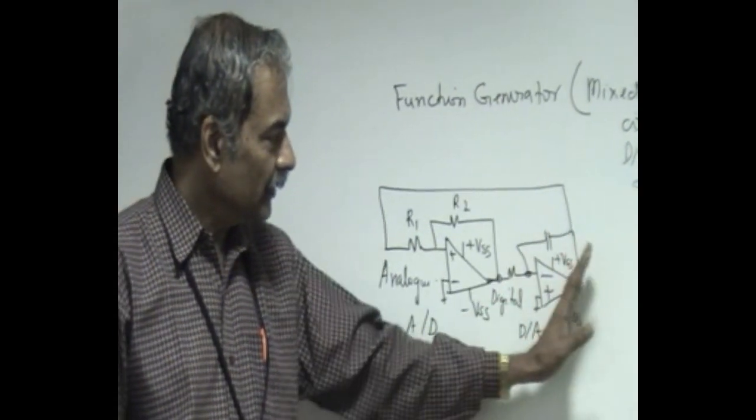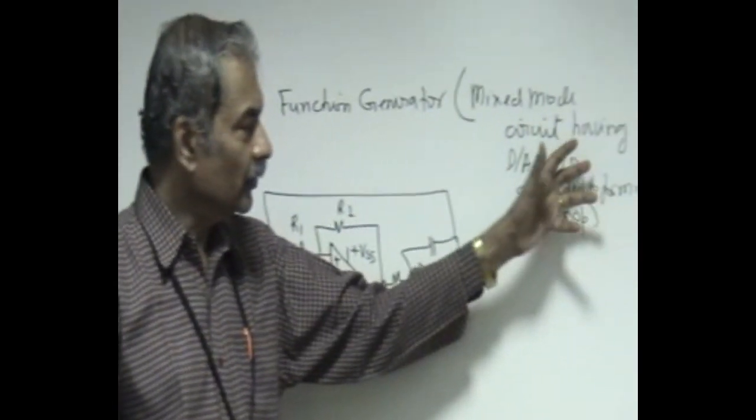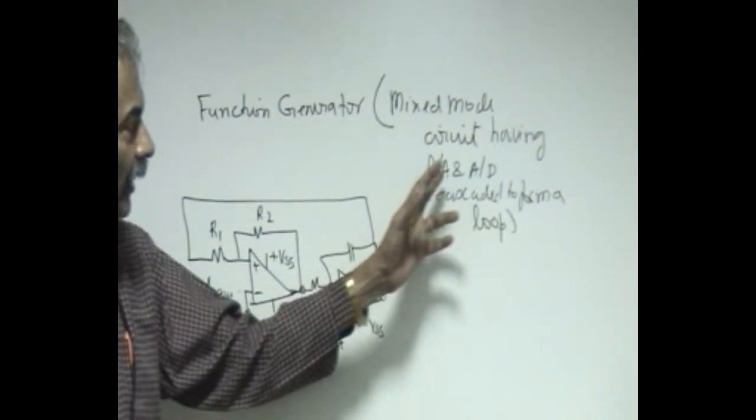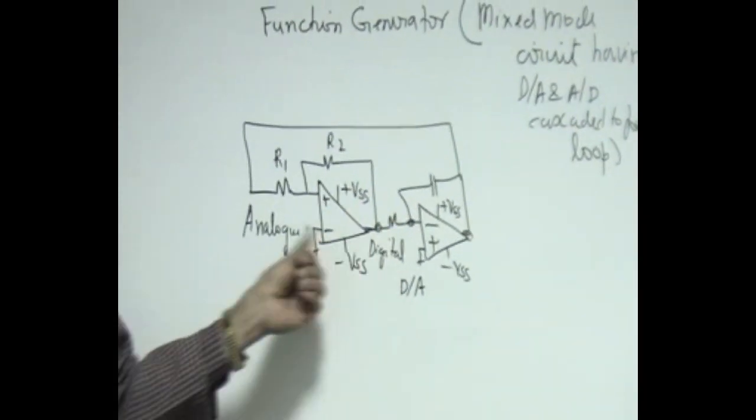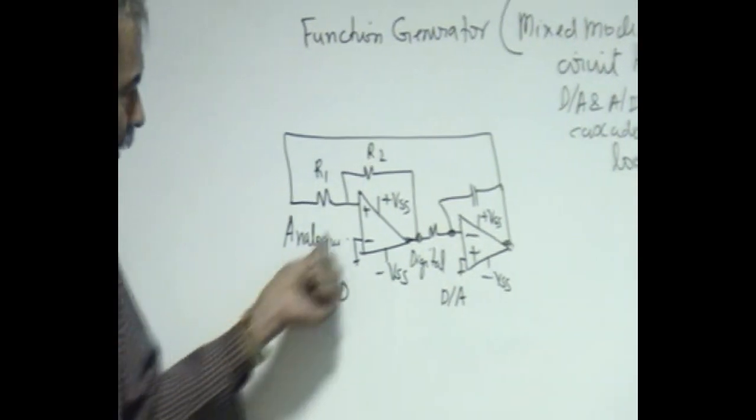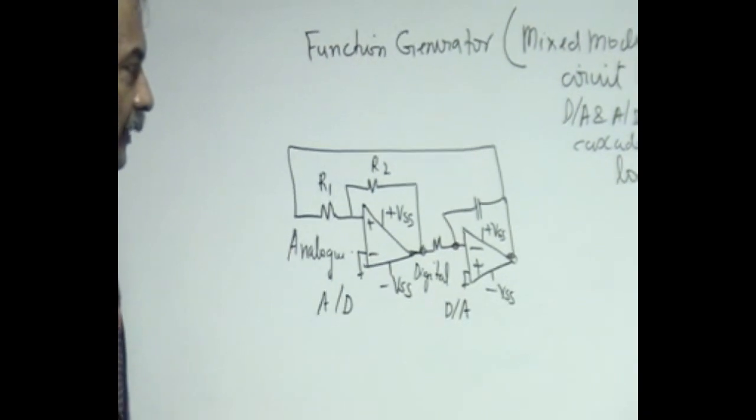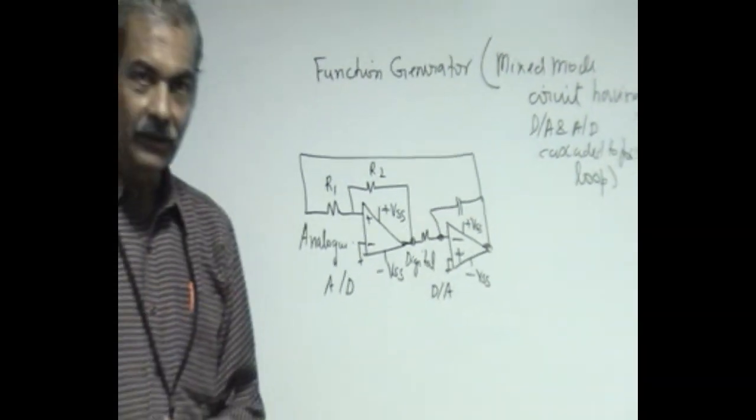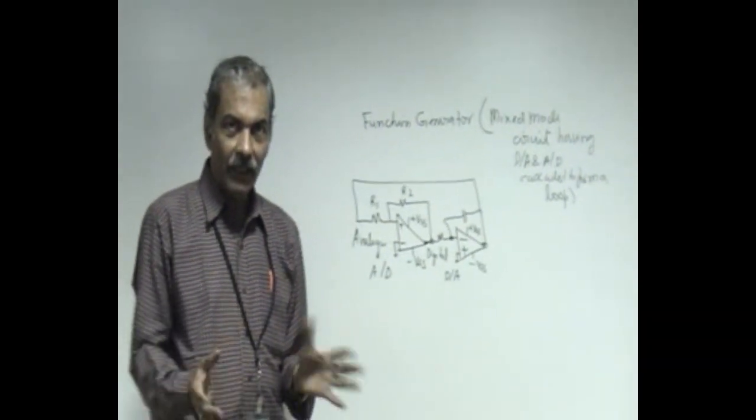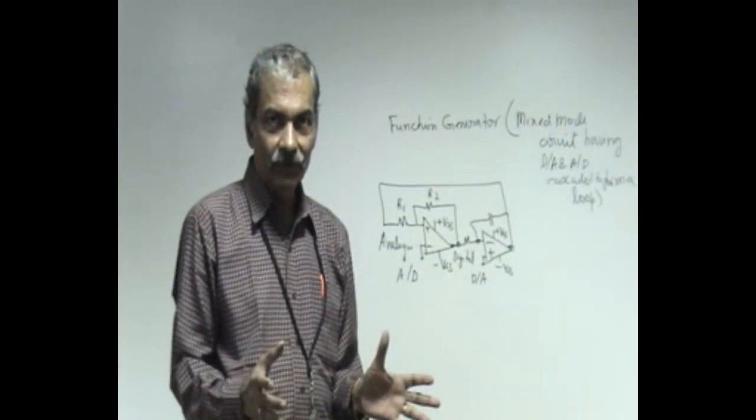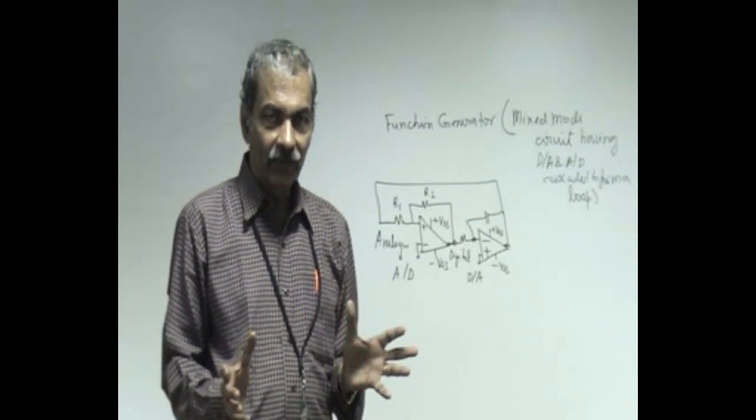This is the D to A converter. Together they form a mixed mode circuit loop, having D to A and A to D. That means you can have analog as input or digital as input at this point and form it as digital input and analog output, or analog input and digital output circuit, which is the sigma delta converter of today.